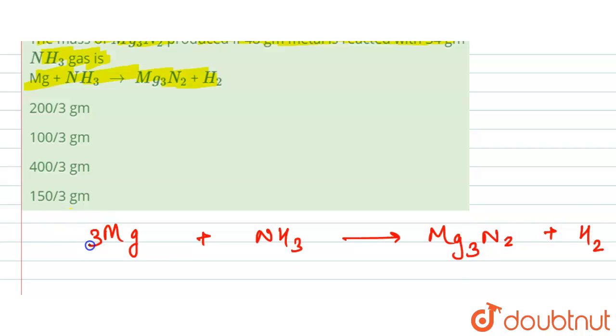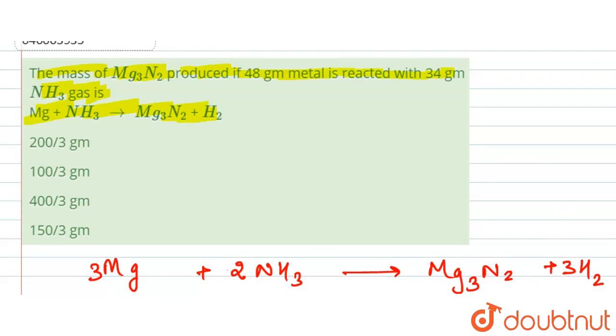Here we have 3 magnesium, so we'll put 3 here. We'll put 2 here and 3 here, so this reaction is balanced now. And here it is given 48 gram metal reacts with 34 gram ammonia.